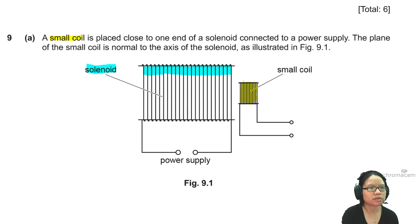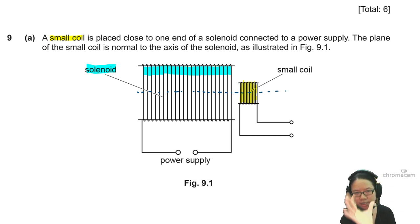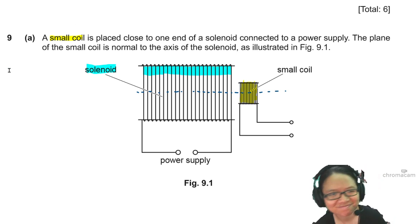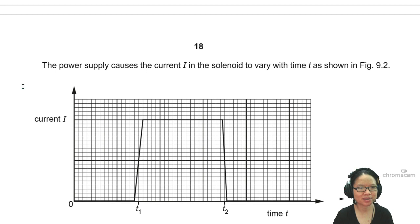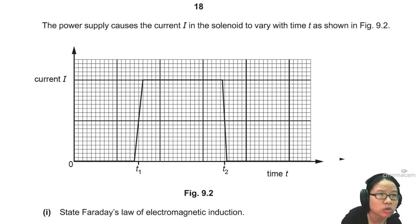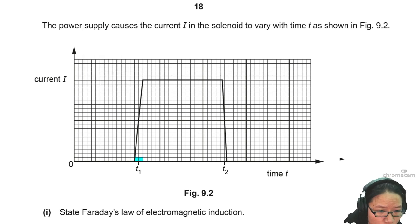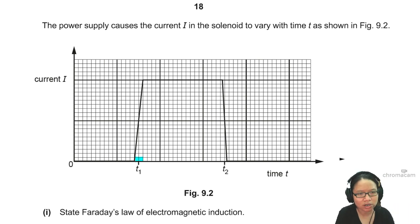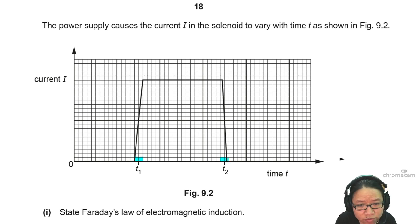What that means is if I draw the center line, it will intersect this way — it's not tilted in any direction. The power supply causes the current in the solenoid to change with time. The current took two boxes of time to increase from zero to maximum value, and also took two boxes to decrease and turn off. The midpoints are T2 and T1.